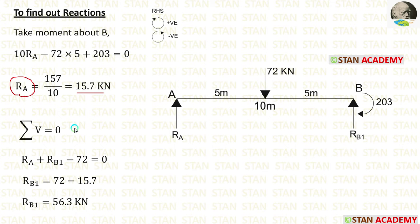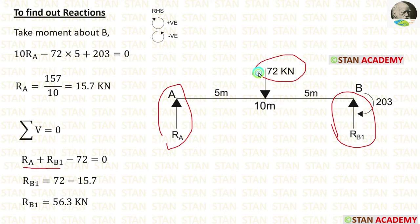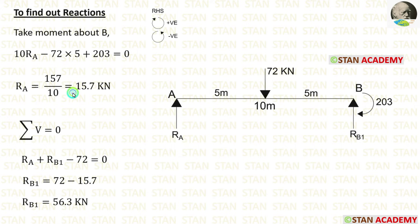To find RB1, let us apply summation of vertical forces equals 0. We are having three vertical forces: RA and RB1 acting upwards (positive), and the point load 72 kN acting downwards (negative). RA we have already calculated. After calculation, we are getting RB1 = 56.3 kN.